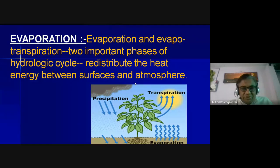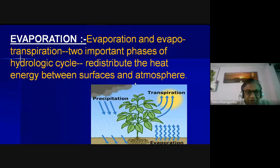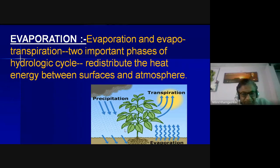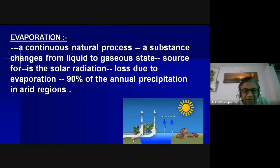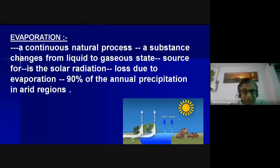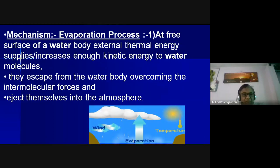Evaporation and evapotranspiration are very important phases of the hydrologic cycle. They distribute and redistribute heat energy between the water surface or soil surface and the atmosphere. It is a continuous natural process where liquid changes to gaseous state, with solar radiation as the main energy source. Notably, 90 percent of the annual precipitation in arid regions like deserts gets evaporated.